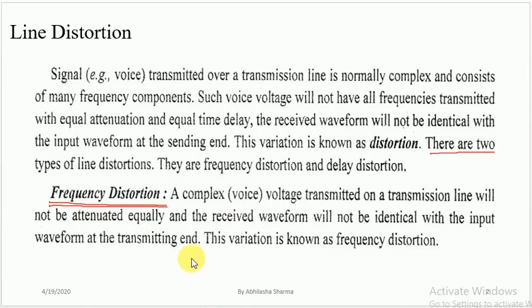As we have already discussed, whenever we want to discuss the transmission of a signal, there are two parameters: one is the propagation constant — which is the combination of the attenuation constant and the phase constant. When the signal is attenuated, that part is considered for frequency distortion.